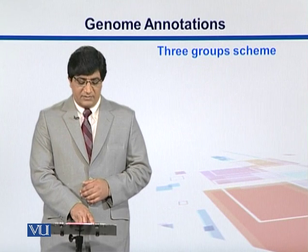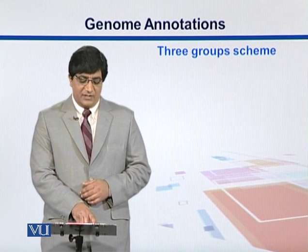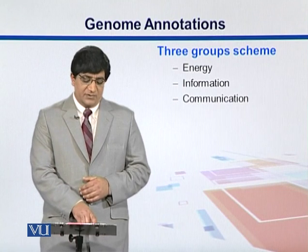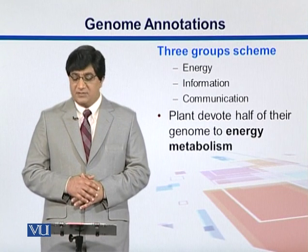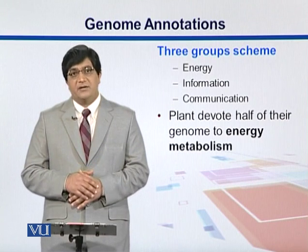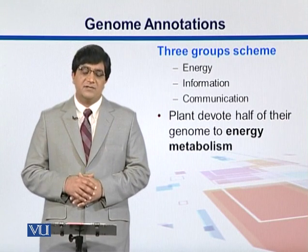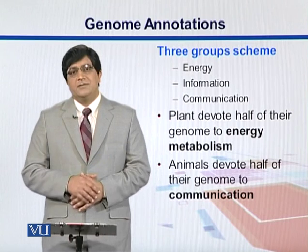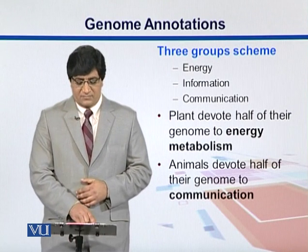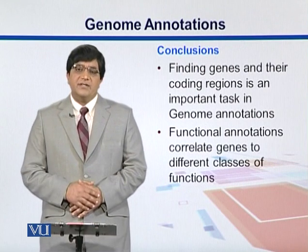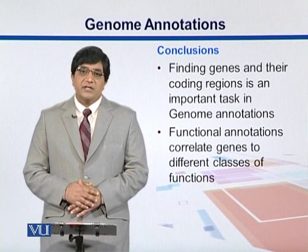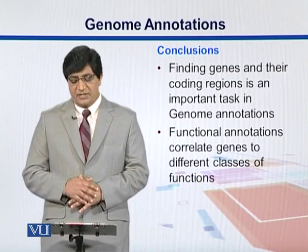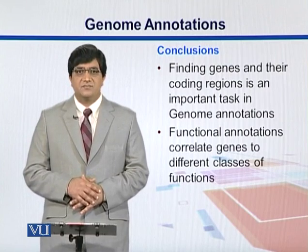There is another scheme called the three-group scheme, which divides all functions into energy-related, information-related, or communication-related. It was found that plants devote half of their genome to energy and metabolism — obviously they make food for all of us — whereas animals spend a lot of their genome in communication. In conclusion, finding genes and their coding regions is an important task in genome annotations. Functional annotations correlate genes into different classes of functions.